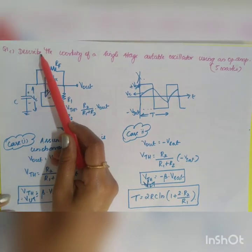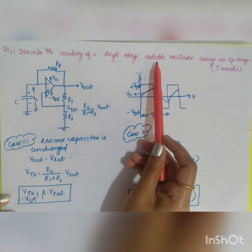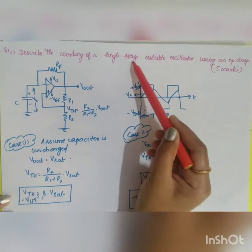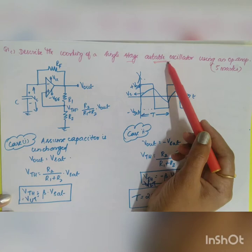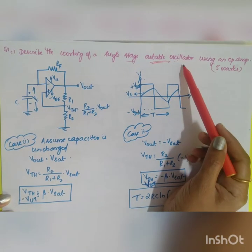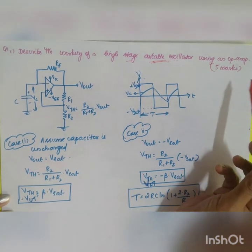Your next question is describe the working of a single stage astable oscillator using an op amp. What is meant by single stage astable oscillator? Astable means it doesn't have any stable state. There is no stable state, so it keeps on oscillating.